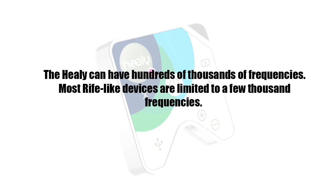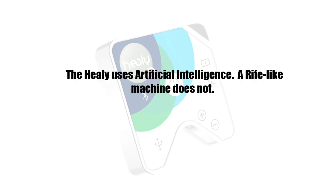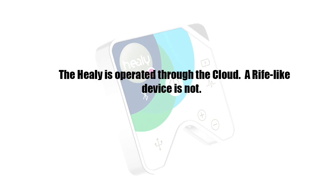The Healy can have hundreds of thousands of frequencies. Most Rife-like devices are limited to a few thousand frequencies. The Healy uses artificial intelligence; a Rife-like device does not. The Healy is operated through the cloud; a Rife-like device is not.